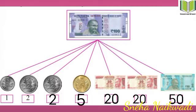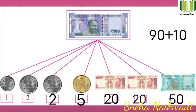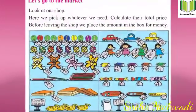Let's count the change: 50 plus 20 makes 70, and 70 plus 20 makes 90. Now the coins — 5 rupees plus 2 rupees plus 2 rupees plus 1 rupee — these coins make 10 rupees. So 90 plus 10 makes 100 rupees.